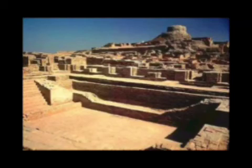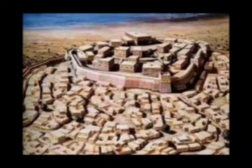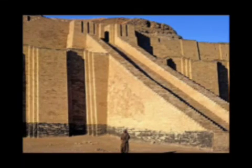This city was once thought to have existed only in legend, but its site was discovered in the 1870s. It is located in present-day Turkey and is best known as the city of the Trojan War, which has been described in the Greek epic the Iliad by Homer. The name of this city is Troy.